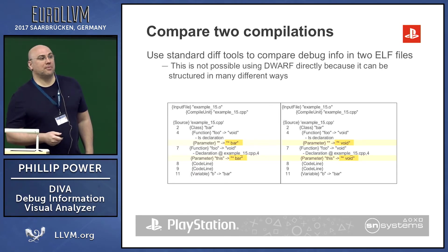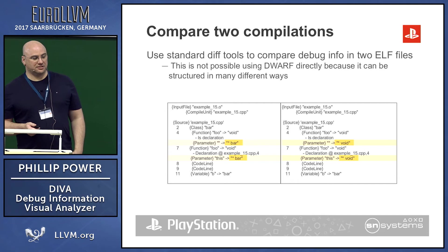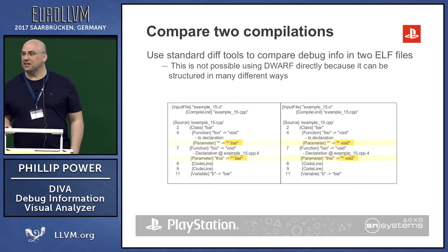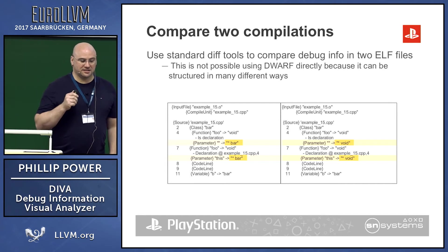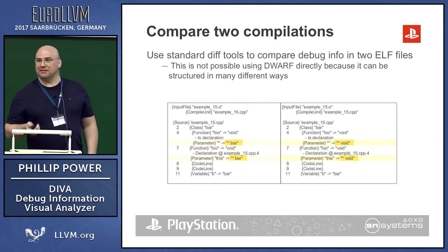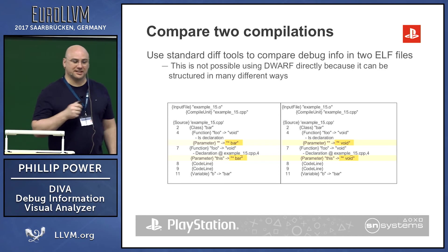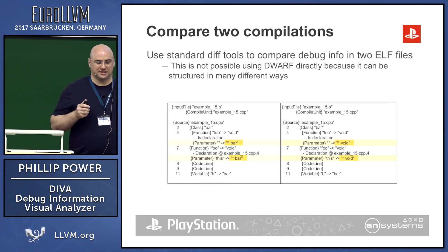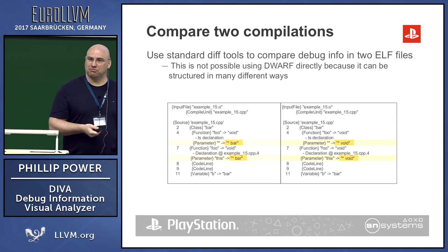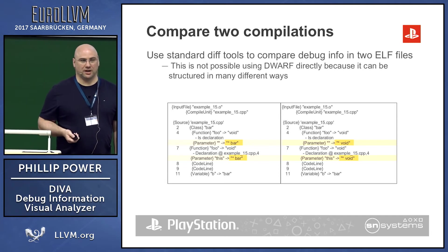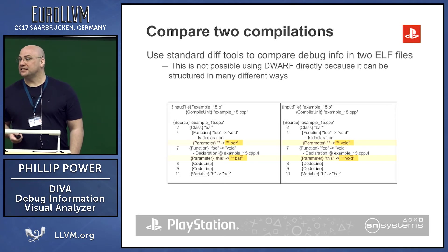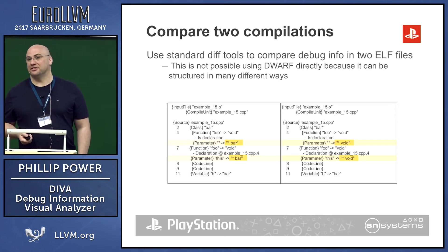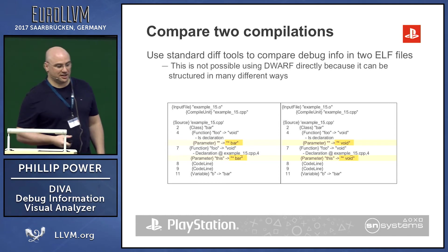A more useful way of looking at this is comparing a before and after of the Diva output. Here it's the output from that same example before and after a patch, where we deliberately corrupted the type information of the parameters of foo. Throw it into any diff tool and you can easily see that it has identified the problem — it shows you exactly where it is, and hopefully it will help you fix the bug.